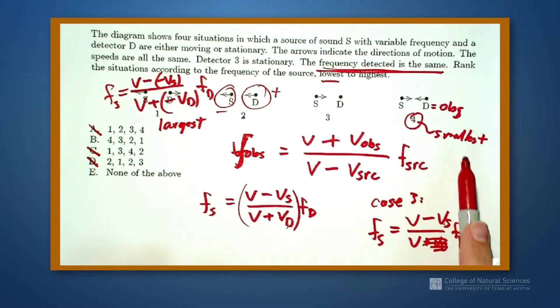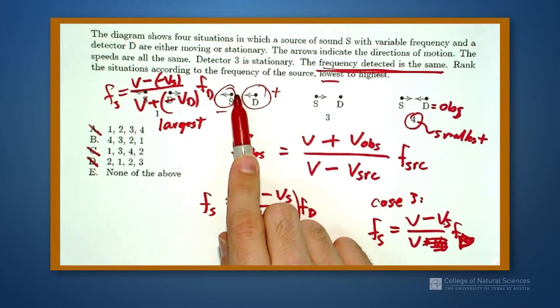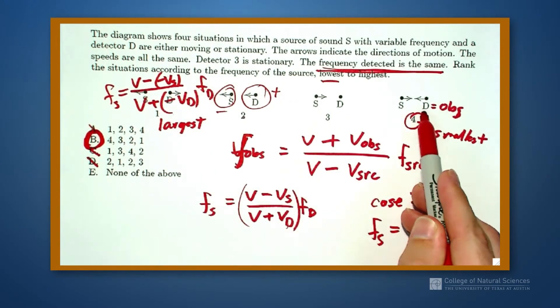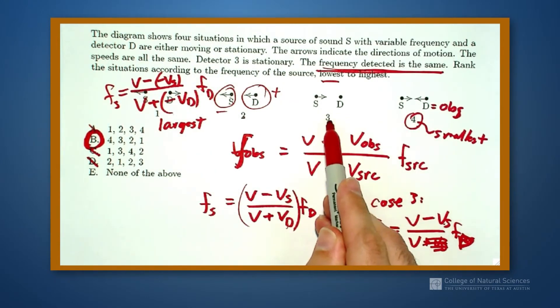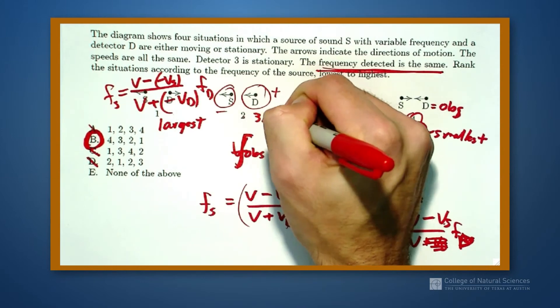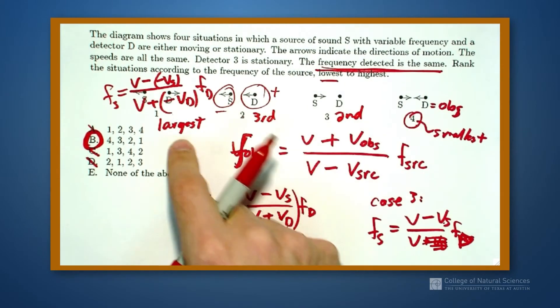Small number divided by a large number, a small number divided by a medium number, and a number divided by itself. So if you actually think about this, this one will be the smallest, this will be the second smallest, this will be the third smallest, and this will be the largest.